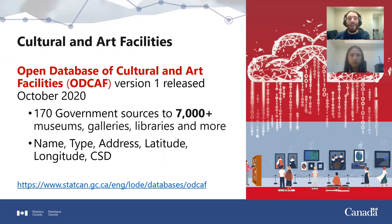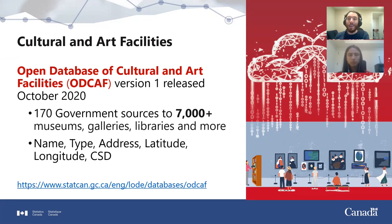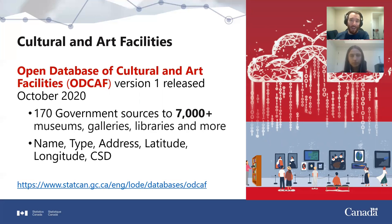The Cultural Learning Facilities dataset version 1 was released in October of 2020. It drew from 170 government sources and has over 7,000 records, including things like museums, galleries, and libraries. An interesting challenge here — unlike educational facilities where an international standard exists for grade ranges, there's no standard definition of what belongs in a cultural facilities database. Analysts had to determine classifications from context and what's generally available from municipalities. Feedback from people working in the arts and culture industry confirmed that our classifications were sensible. The dataset contains facility names, types — both original and standardized — address, latitude and longitude, and census subdivision.